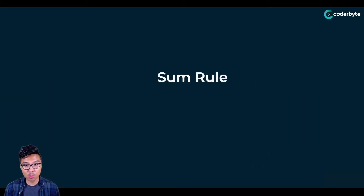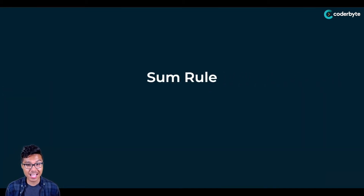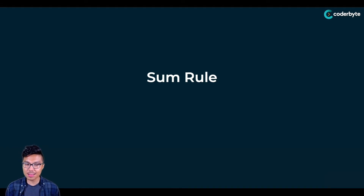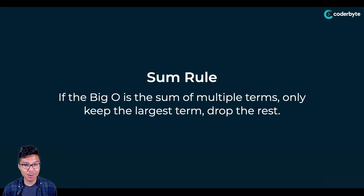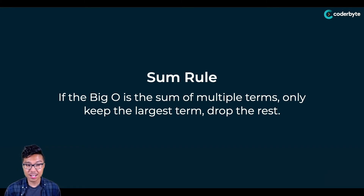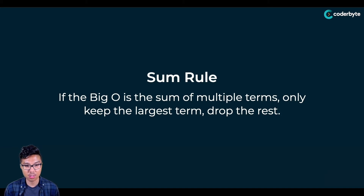There's only one more rule we need to learn to simplify any Big O notation, and that is the sum rule. The sum rule is a little different. For the sum rule, if our Big O is the sum or addition of multiple terms, we can only keep the largest term and are allowed to drop all of the smaller terms.